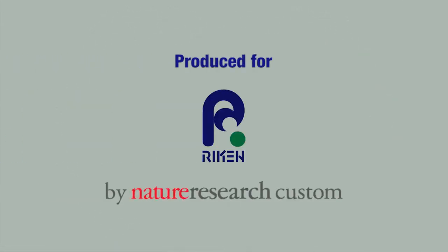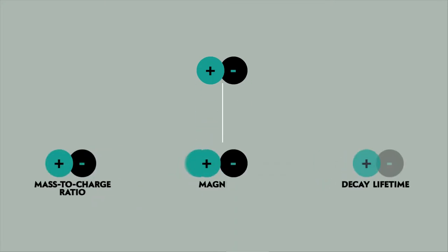Ricken physicists are getting closer than ever to answering that question. There must be some tiny but important difference between matter and antimatter. The three main suspects are mass to charge ratio, decay lifetime, and magnetism.